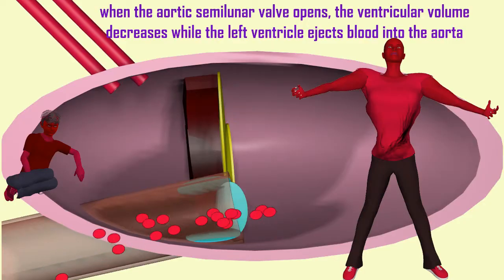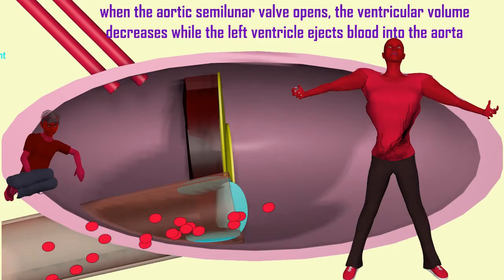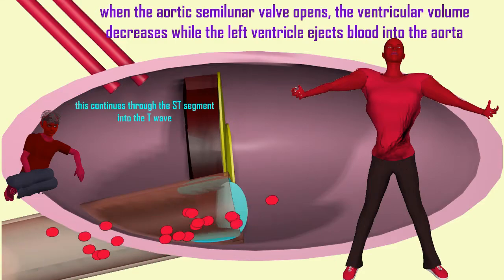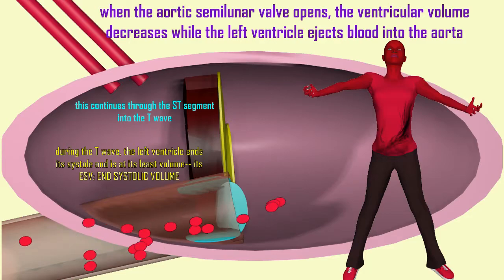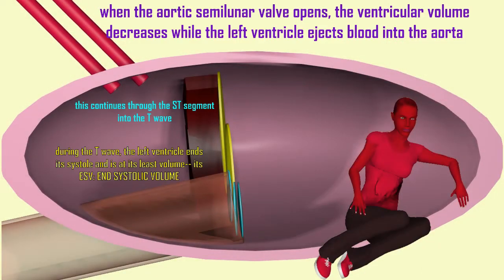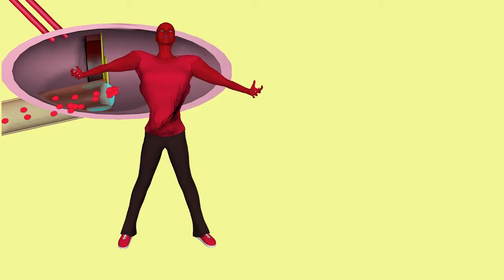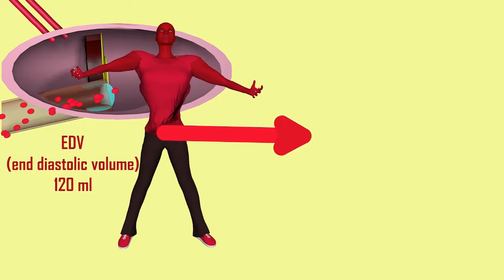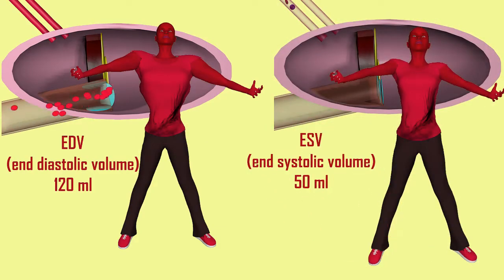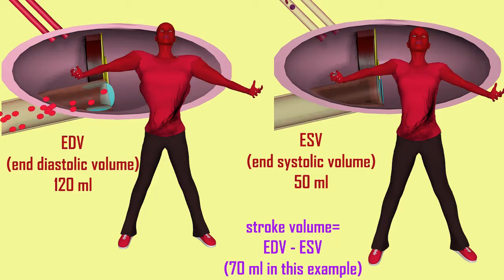In the same way, the left ventricle undergoes systole at the beginning of the QRS complex, and the aortic semilunar valve opens, allowing the left ventricle to eject blood. As blood leaves the left ventricle, the volume decreases from its maximum — its end diastolic volume — to its minimum, its end systolic volume of about 50 milliliters. As a result, the stroke volume is about 70 milliliters: the EDV of 120 milliliters minus the ESV of 50 milliliters.